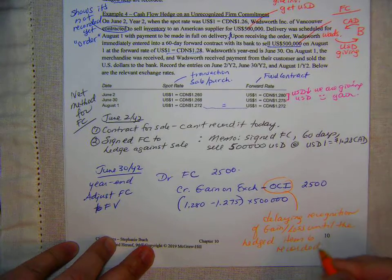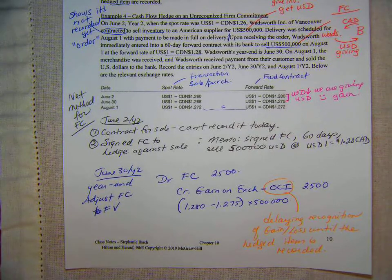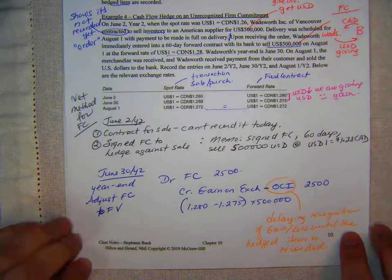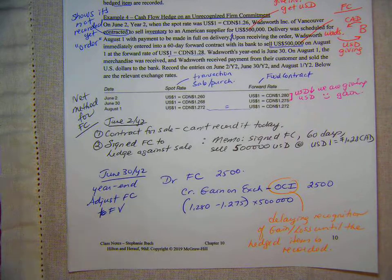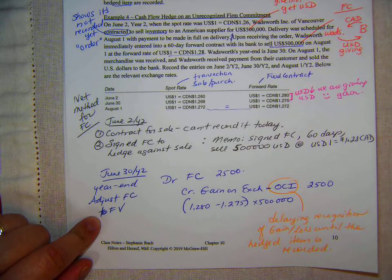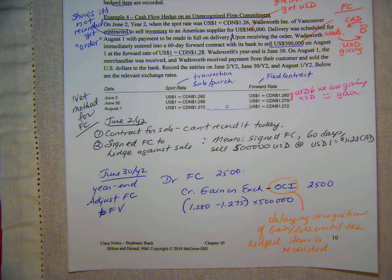Just to recap: we've got an unrecognized firm commitment so we can't record it right now. We did sign a forward contract, but using the net method — which is what you use for Wiley Plus — we just do a memo. At year end we adjust the forward contract value; we don't adjust the sale like we did at the beginning of the chapter because we haven't recorded it yet. The next step is settlement on page 11.